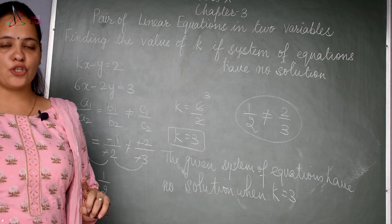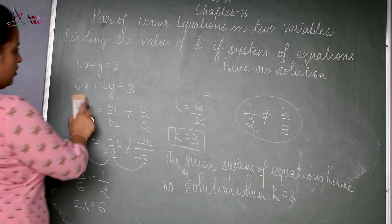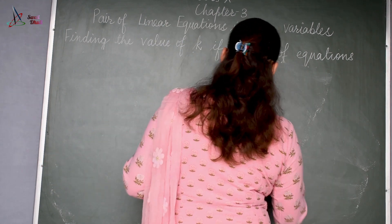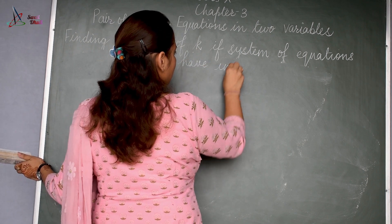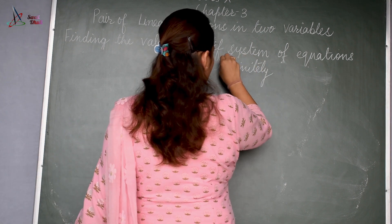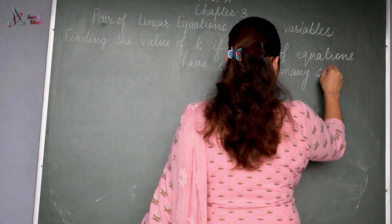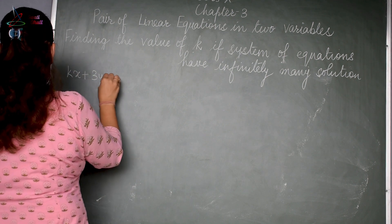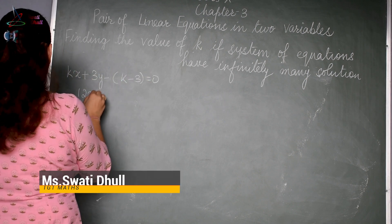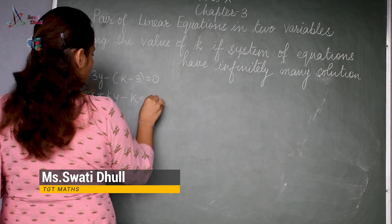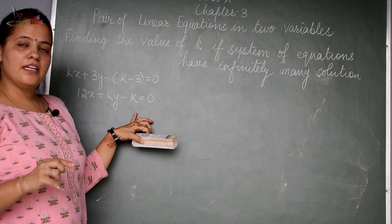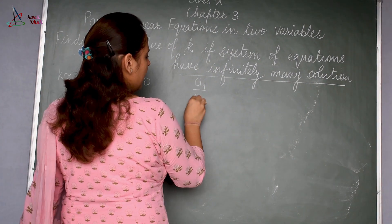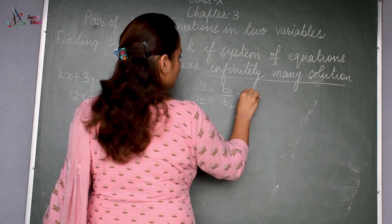You must know the conditions for no solution, unique solution, and infinitely many solutions. Now let's proceed to the third condition: when the system of equations has infinitely many solutions. The condition is a1 by a2 is equal to b1 by b2 is equal to c1 by c2.